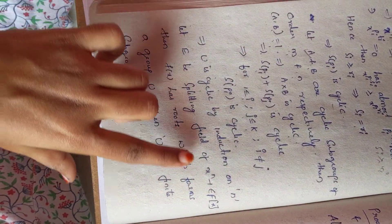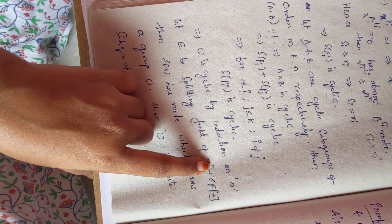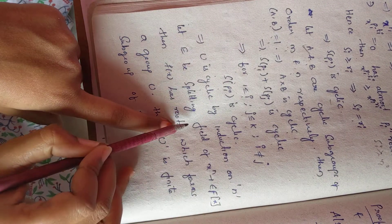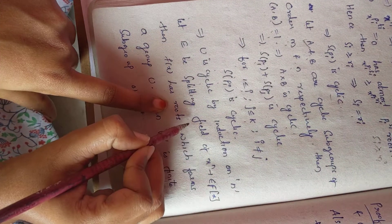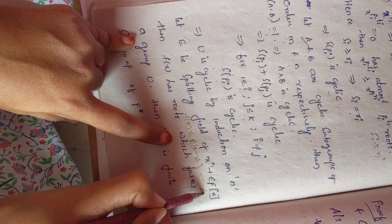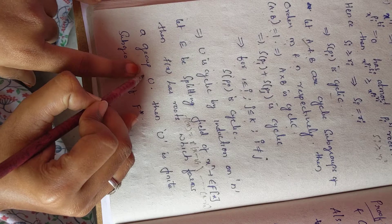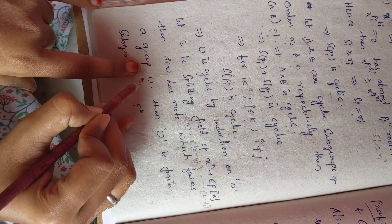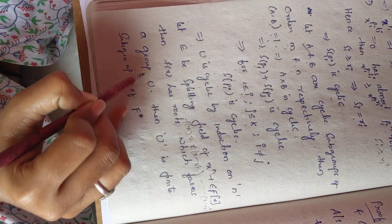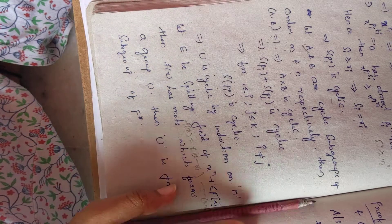Let E be the splitting field of x^n minus 1 over f[x]. Then f[x] has roots and its splitting field exists. The polynomial can be written as c · (x - α1)(x - α2)···(x - αn), where the roots exist and form a cyclic group u. These roots form a finite subgroup of f*, hence the theorem is proved.